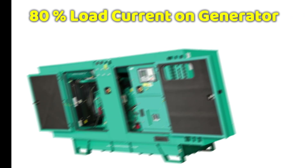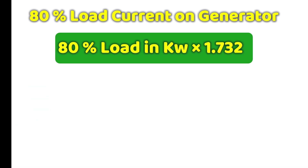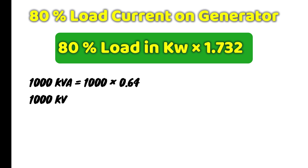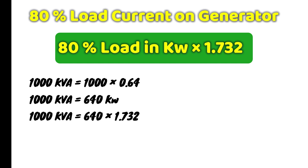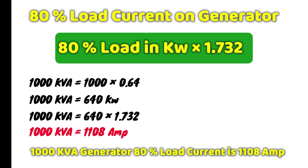For the 80% load current rating — the maximum load that won't affect the generator — multiply 1000 kVA by 0.64 to get 640 kW, then multiply that result by 1.732. The answer is 1108 ampere. This is the perfect ampere rating for the maximum current that can flow through the 1000 kVA generator. Thanks for watching this video.